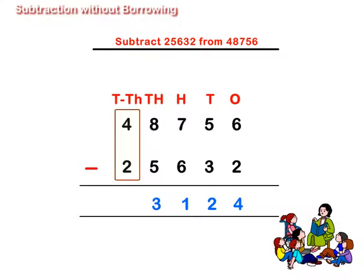And lastly, at tens thousands place, we get 4 minus 2 is equal to 2. Thus, 48,756 minus 25,632 is equal to 23,124. Thank you.